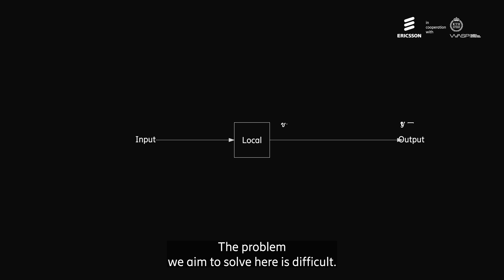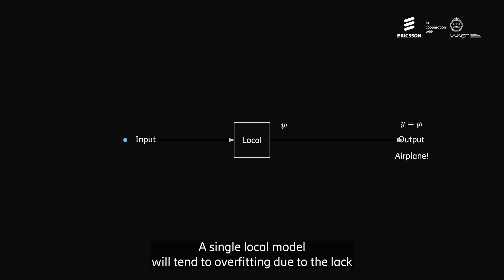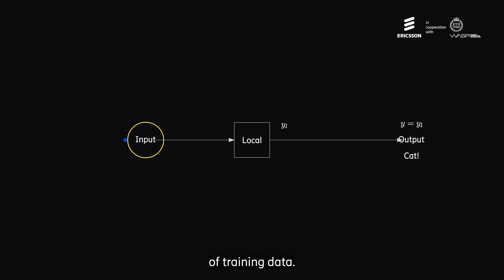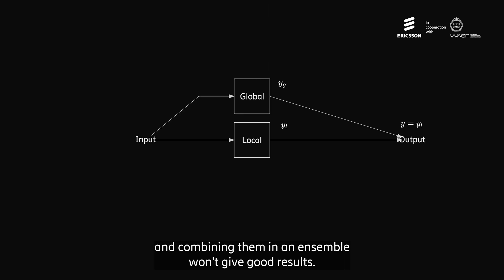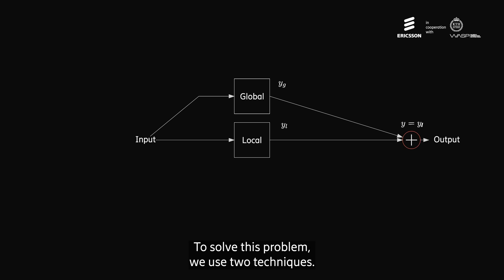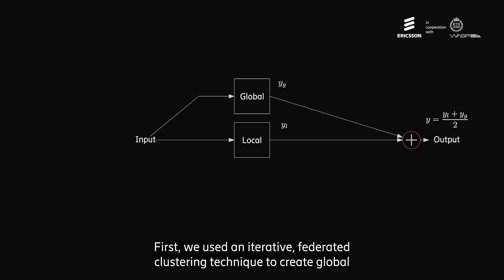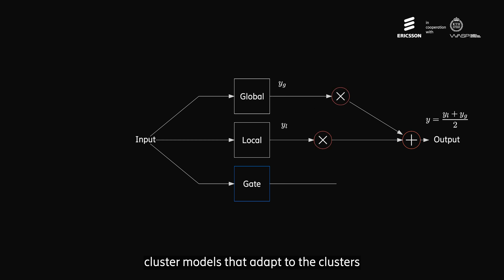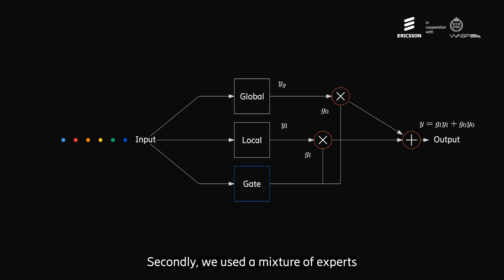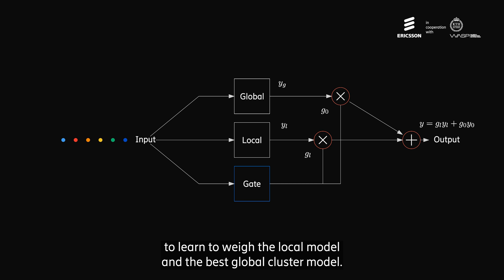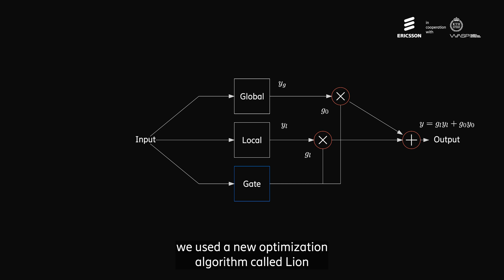The problem we aim to solve is difficult. A single local model tends to overfit due to lack of training data, a global model will not be good for any individual client, and combining them in an ensemble does not give good results. To solve this, we used two techniques. First, an iterative federated clustering technique creates global cluster models that adapt to the clusters formed by the non-IID data. Second, a mixture of experts learns to weigh the local model and the best global cluster model. Finally, we adapted a new optimization algorithm called Lion for use on the parameter server.